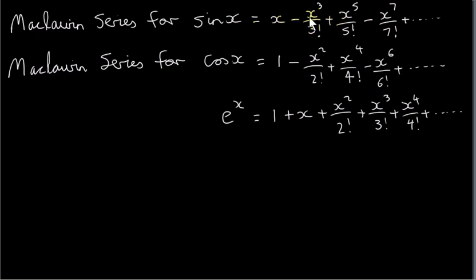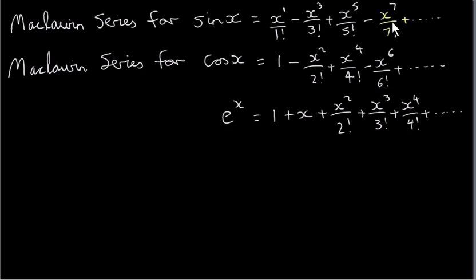You can see that the terms alternate and the powers are odd. The first term has an odd power — it's x to the power of 1. We could write the first term as x to the power of 1 divided by 1 factorial, so the power is equal to the denominator. 1 factorial is just 1. So the more terms we take of this series, the better our estimate will be for sine of x.